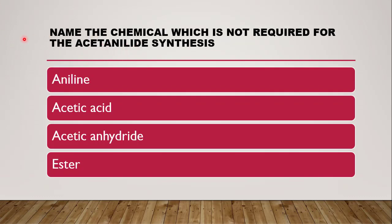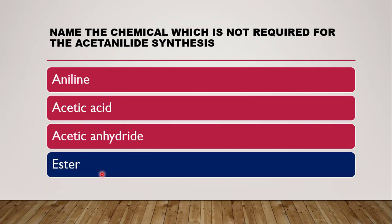Next question: name the chemical which is not required for acetanilide synthesis — whether it is aniline, acetic acid, acetic anhydride, or ester. The correct answer is ester, because aniline reacts with acetic acid in the presence of acetic anhydride to form acetanilide. So ester is not used in acetanilide synthesis.